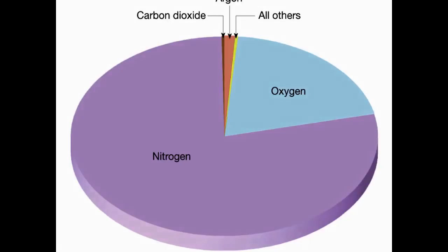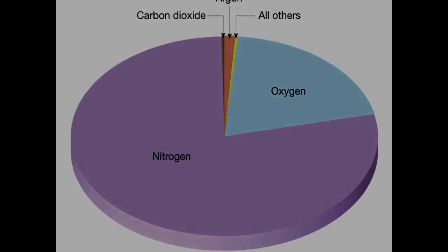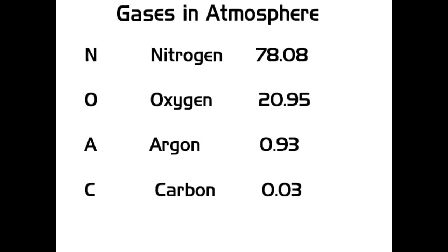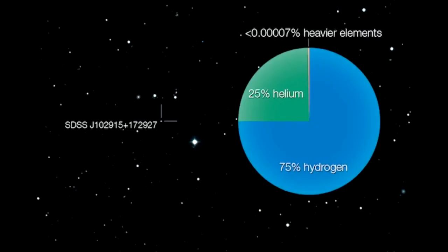The most abundant element in the atmosphere is nitrogen at 78.08%, oxygen at 20.95%, argon at 0.9%, and carbon at 0.03%.